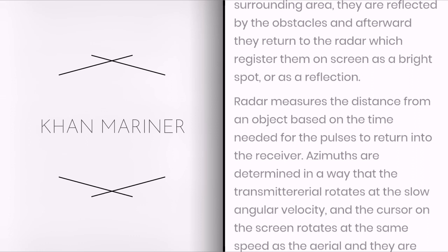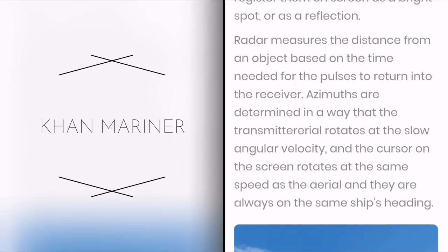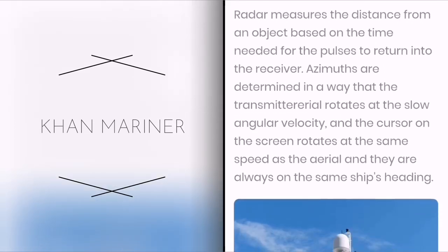Radar measures the distance from an object based on the time needed for the pulses to return into the receiver. Azimuths are determined in a way that the transmitter aerial rotates at the slow angular velocity.